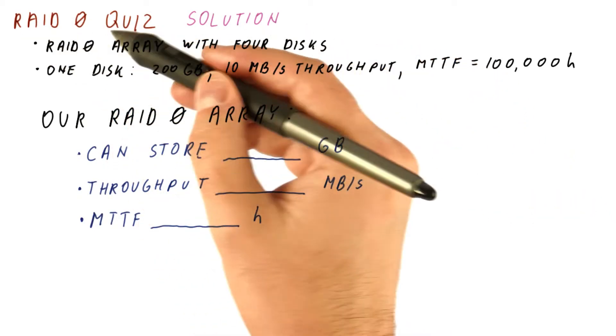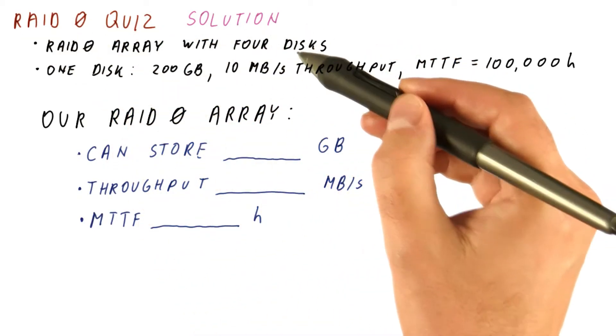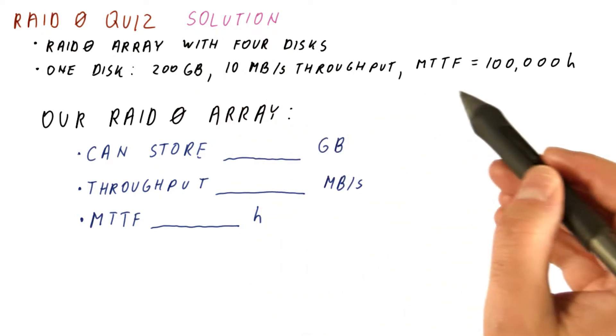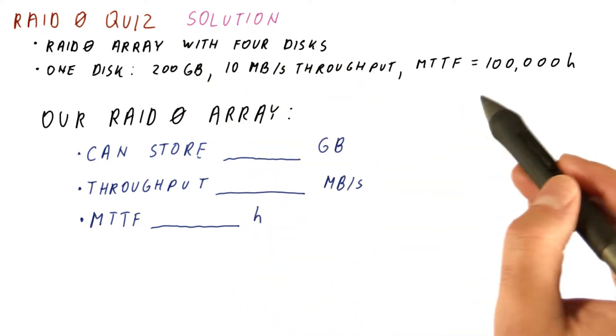Let's look at the solution to a RAID 0 quiz, where we have an array of four disks, and for one disk we know the capacity, throughput, and MTTF.